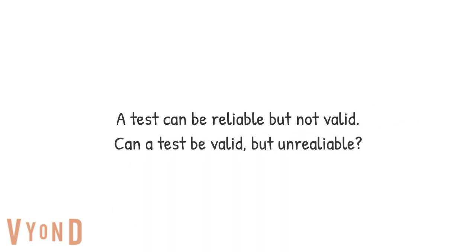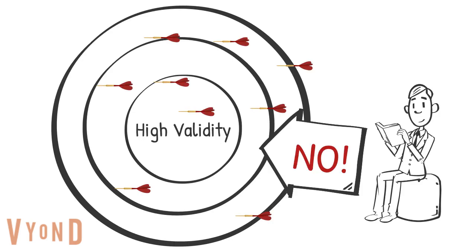Take a second to pause the video — do you think a test can be valid but unreliable? The answer is no. A test cannot be valid and unreliable because if the scores are not consistent, they won't always be valid. They may be valid sometimes, but not during other times. This picture is a great example of why a test can't be valid if it's unreliable.